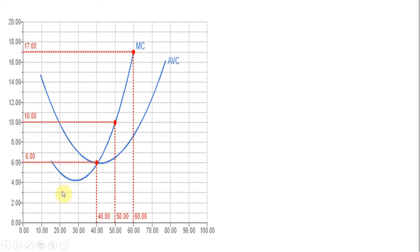The reason for that is we have something called the shutdown point. To locate the shutdown point, just find the minimum point on the average variable cost curve, and that'll also be the point where marginal cost intersects average variable cost.